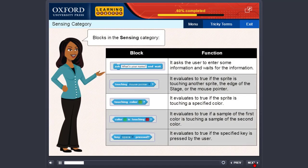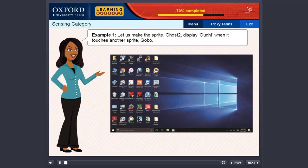Sensing category. Some of the blocks in the sensing category are explained in this table. Now, let us make the sprite Ghost2 display Ouch when it touches another sprite Gobo.